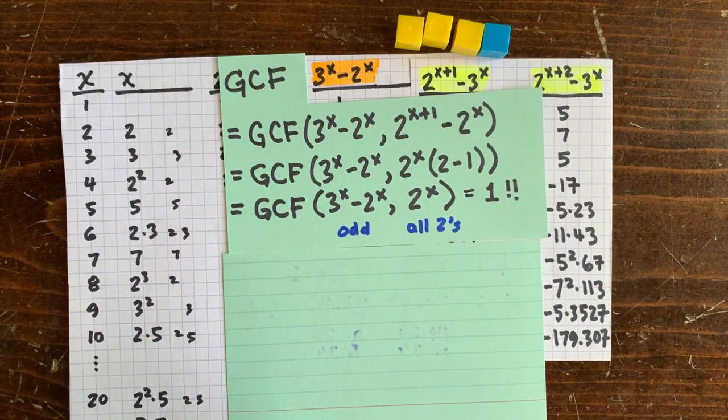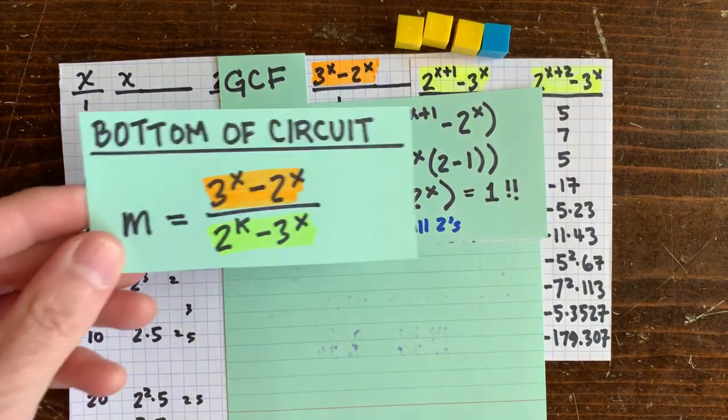So they're co-prime. And that means that these two, numerator and denominator, are also co-prime.